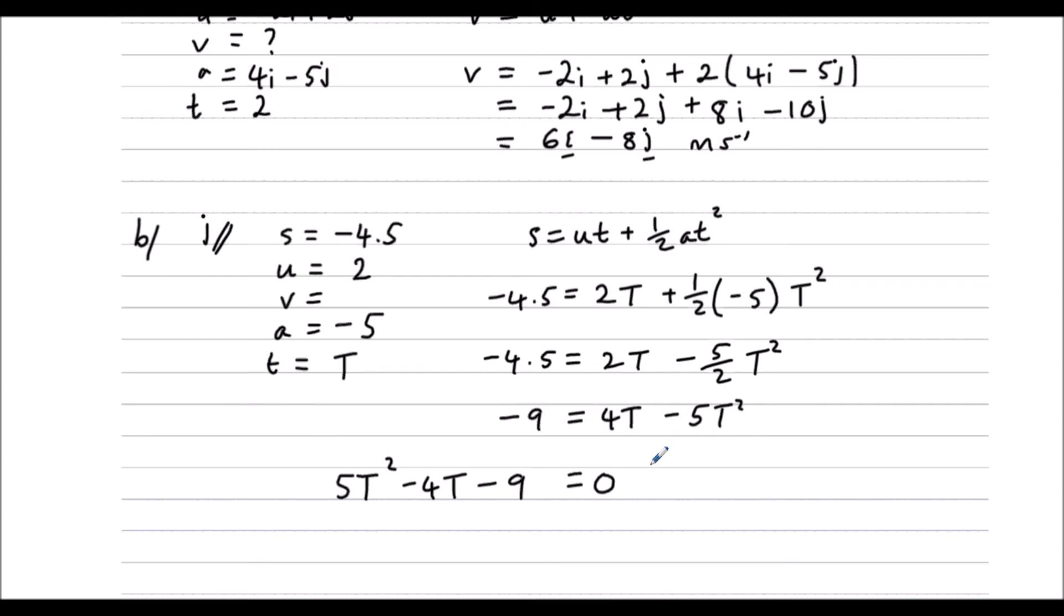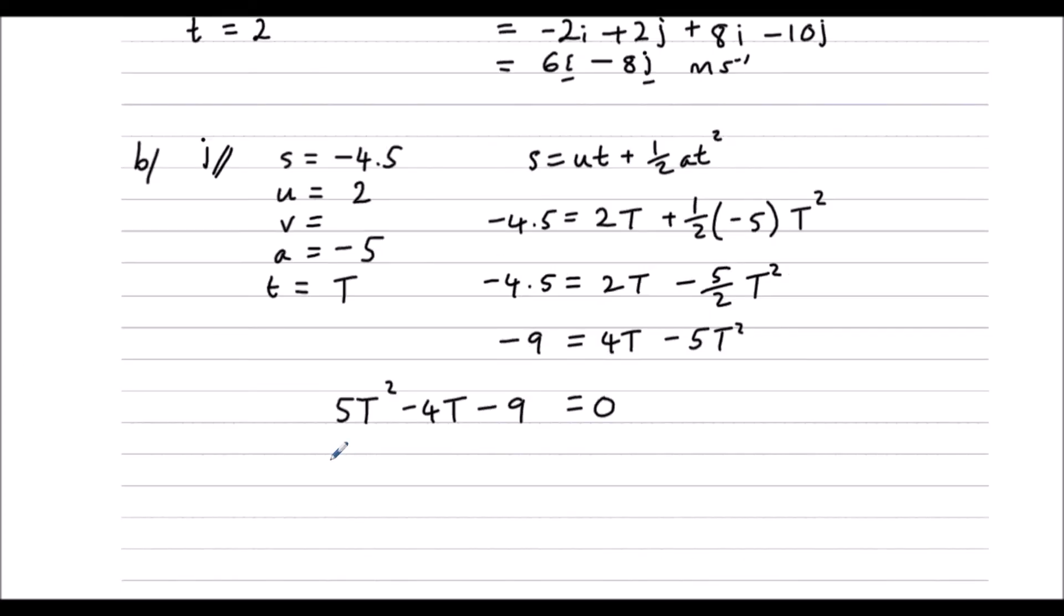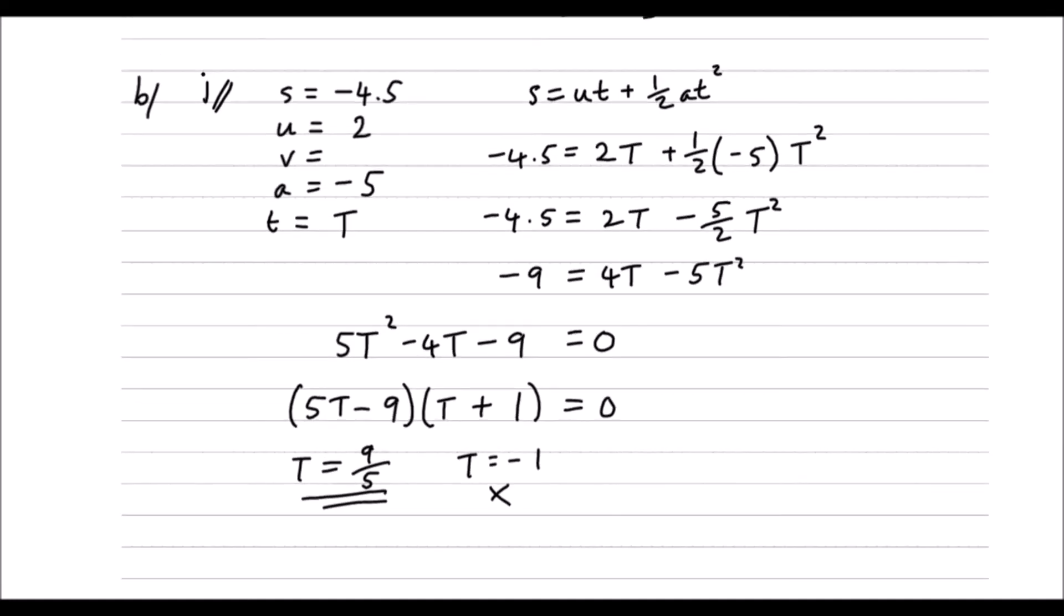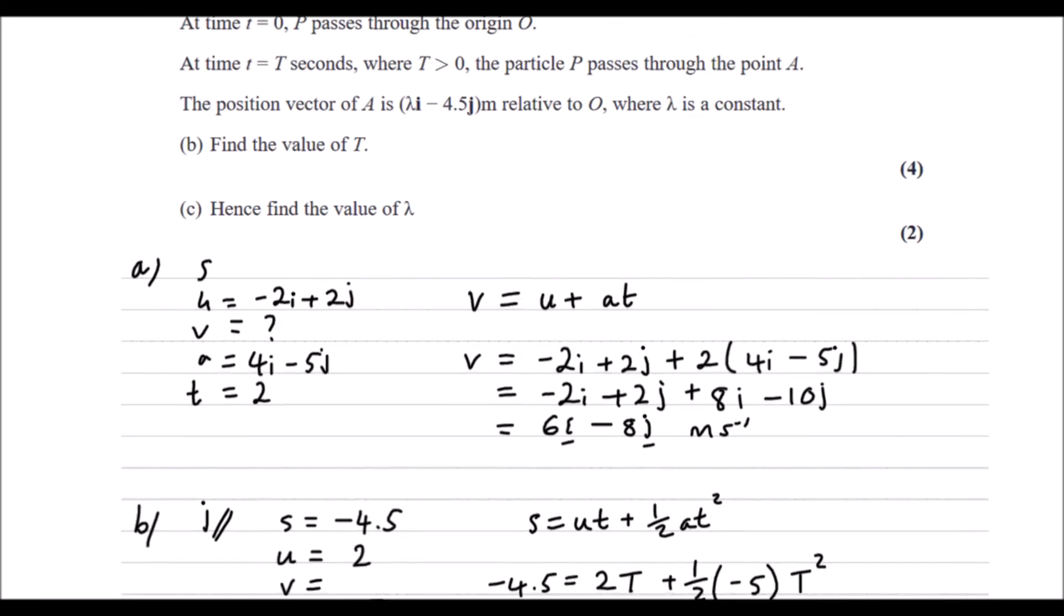Now let's solve that. We can factorize it. We've got 9 and 1, where you want plus 5, take away 9. So 5T minus 9 and T plus 1. So that means T is 9 over 5, or T is negative 1. We don't want a negative T, so it's 9 over 5, or 1.8 seconds. So that's the value of T.